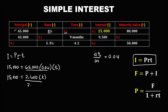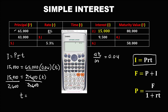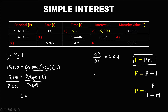To solve for the time, divide both sides by 2,600. So the time equals 15,000 divided by 2,600, which equals 5.77. The time is 5.77 years.